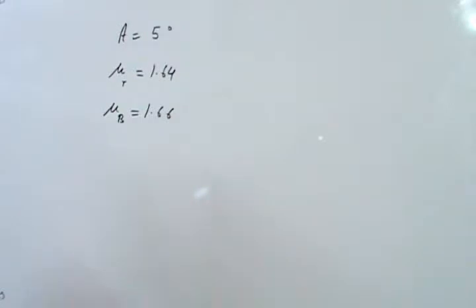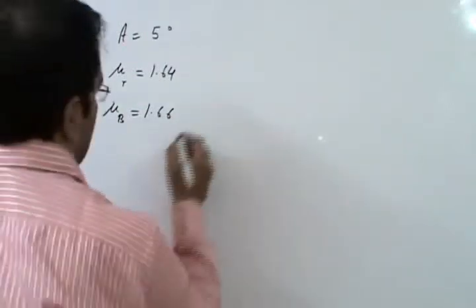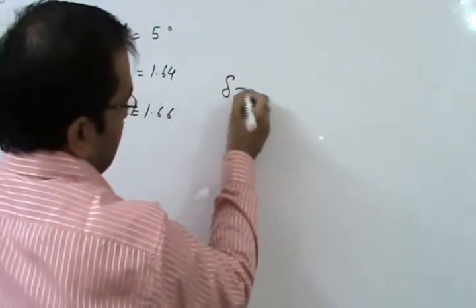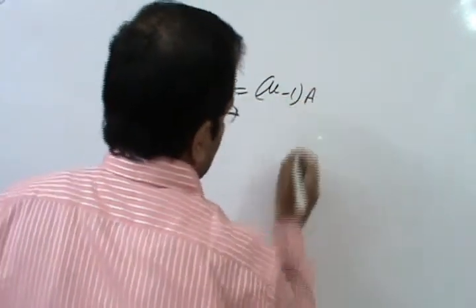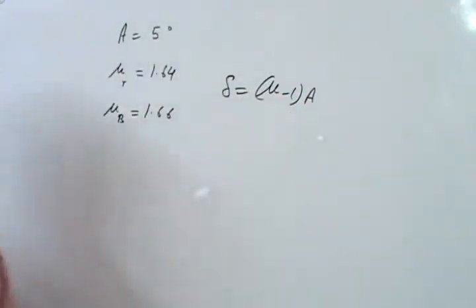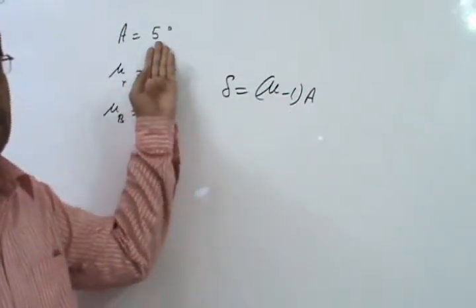We are required to find the angle of deviation between the two rays. We know that delta is given by mu minus 1 into a, provided a is a small angle as the case in this question is.